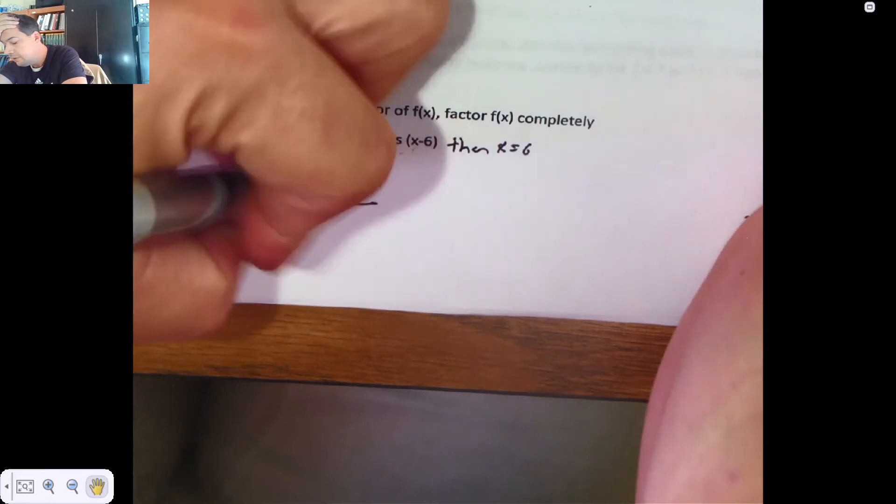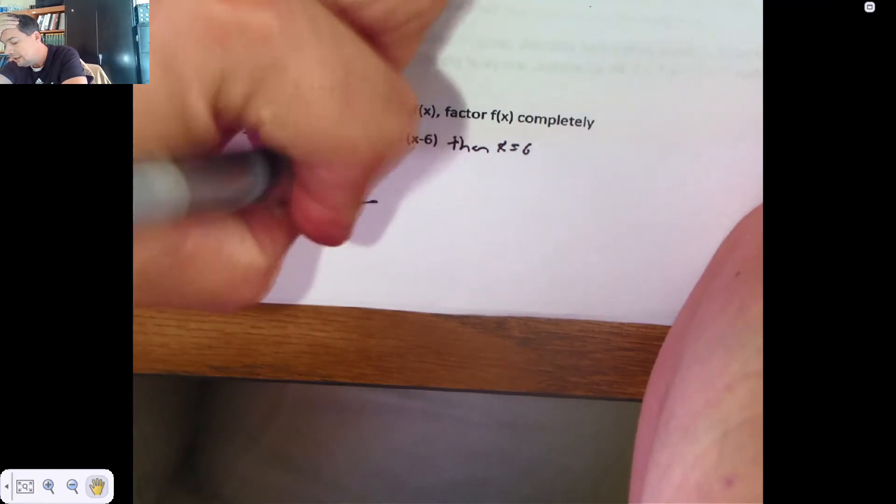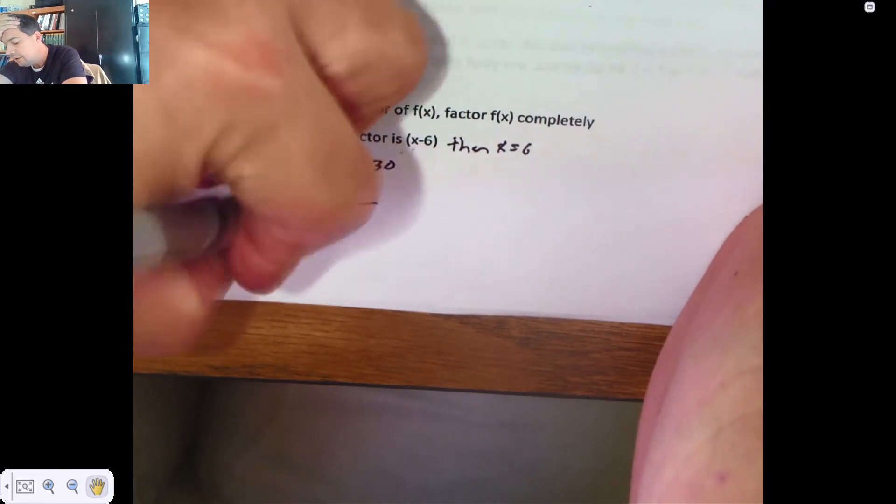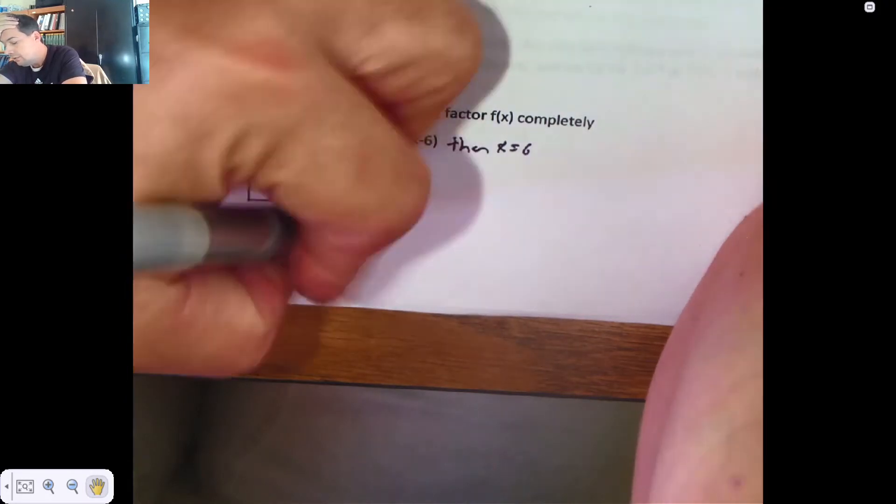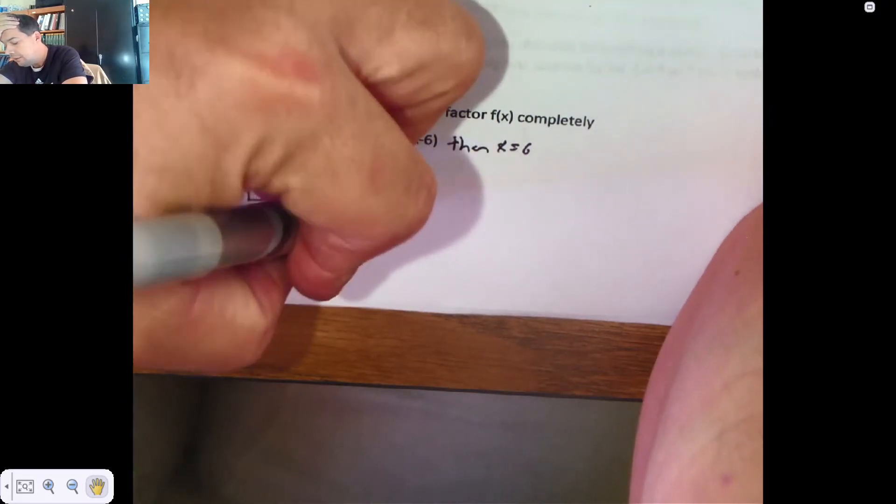Coefficients are 1, negative 10, 19, and 30. And we drop, and we multiply, and we add. We multiply, and we add.